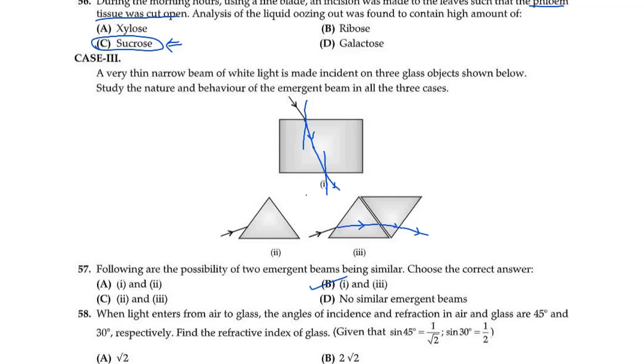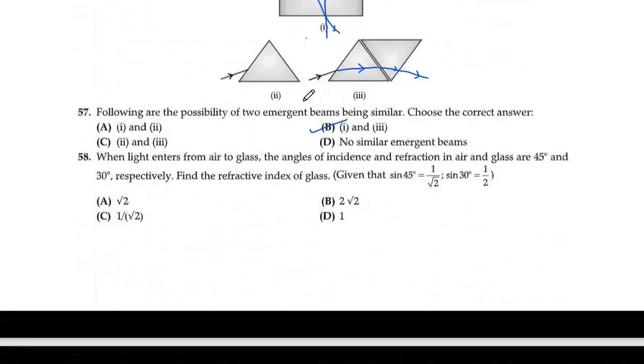Question 58: When light enters from air to glass, the angle of incidence and refraction in air and glass are 45 degrees and 30 degrees respectively. Find the refractive index of glass. How do you calculate refractive index? You know it is mu_g equals sine i over sine r. We'll use Snell's law. Sine i is how much? It is 45, sine 45, and r is sine 30. So sine 45 is 1 by root 2, and sine 30 is 1 by 2. When you divide it, you will get the answer as root 2, which is option A.